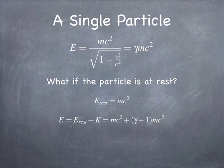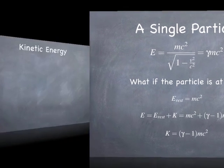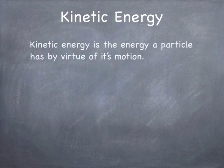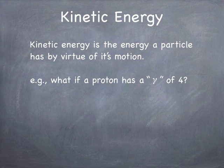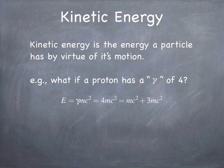If you have a particle in motion, then in addition to the rest energy you get kinetic energy, which is the energy a particle has by virtue of the fact that it's moving, and that turns out to be gamma minus 1 times mc squared. Kinetic energy is the energy a particle has purely as a consequence of its motion. For example, if you have a proton that's moving with a gamma of 4, its energy is going to be 4 times its rest energy, 4mc squared. But 3 fourths of that — 75% of it — is going to be kinetic energy, so its kinetic energy is 3 times its rest energy.